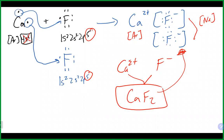A couple of notes: when drawing Lewis dot symbols for ionic compounds, always include the charge because they are ions. Remember there is no sharing of electrons — everything has been transferred. One hundred percent of the time, if you see a metal and non-metal coming together, it is an ionic compound with a transfer of electrons.